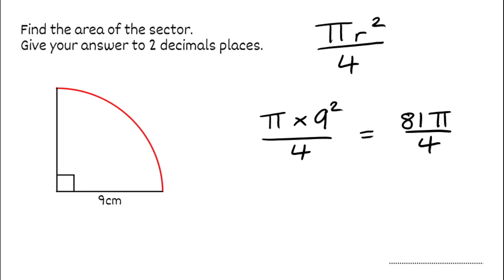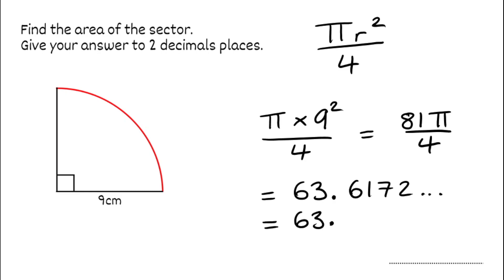So what we have to do is pop that into the calculator because we want it to two decimal places. 81 pi divided by 4 gives us 63.6172, so to two decimal places this would be 63.62. Our final answer is 63.62, and because we were dealing with centimetres our units would be centimetres squared for the area.